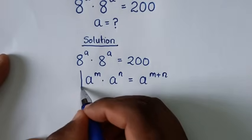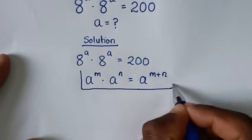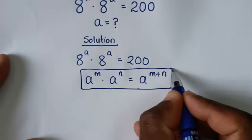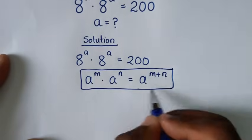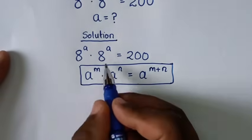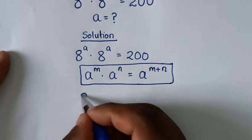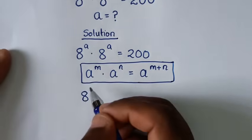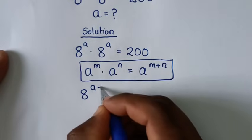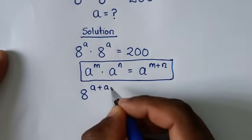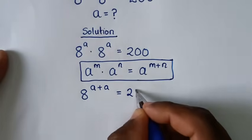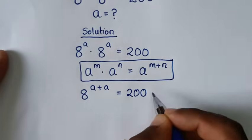So from this rule, we'll apply this form. It will be the same base of 8, then we add the powers, so a plus a, giving us 8 power a plus a is equal to 200.